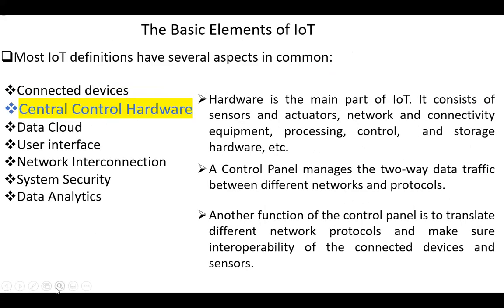The next element is central control hardware. Hardware is the main part of IoT. It consists of sensors and actuators, network and connectivity equipment, processing, control, and storage hardware. The control panel manages the two-way data traffic between different networks and the protocols. Another function of the control panel is to translate different network protocols and make sure interoperability of the connected devices and sensors.